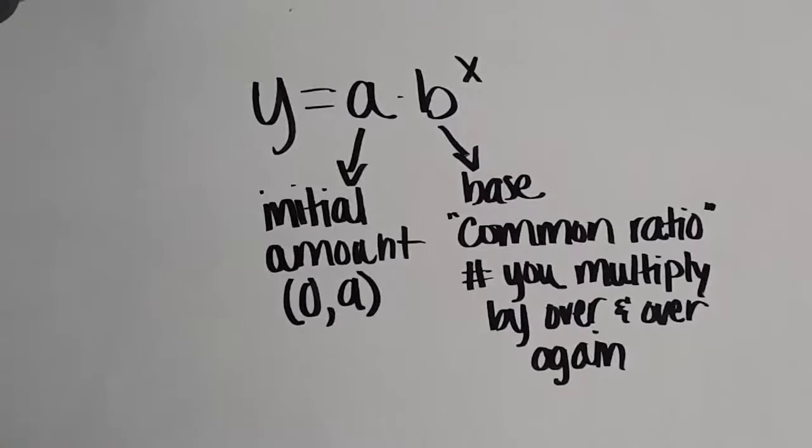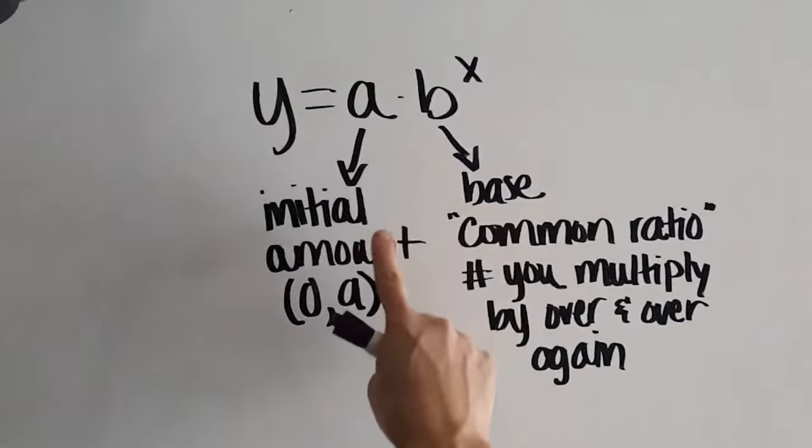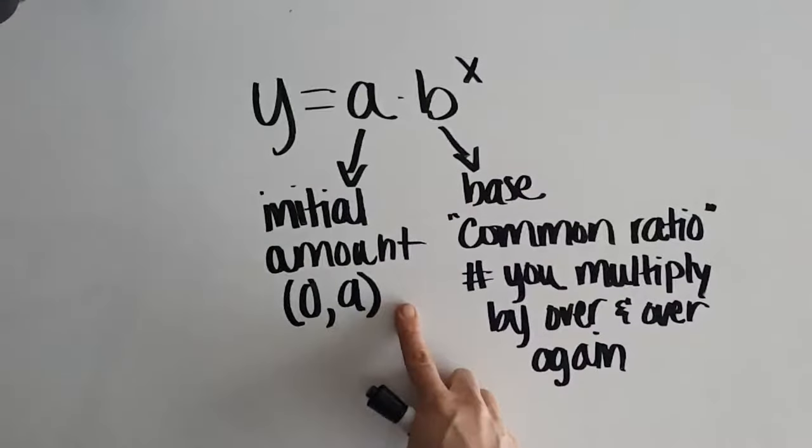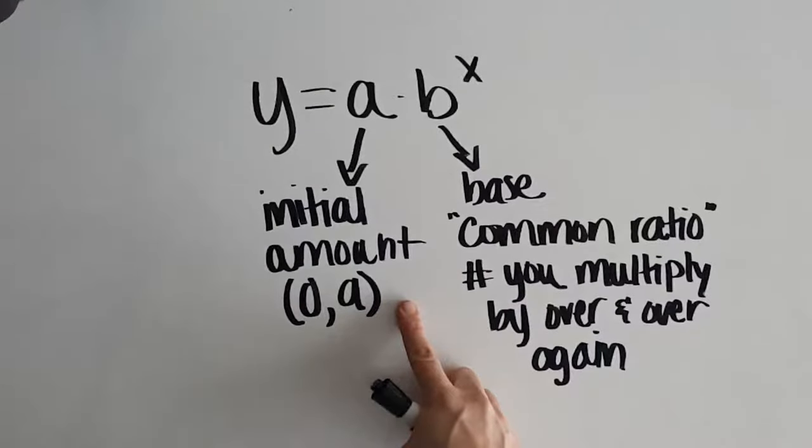So when we have equations in the form y equals a times b to the power of x, we have to know what these values mean so we can find them. So a always represents your initial amount. It's what you start with. So in a situation, if I say the population has 100 people, a would be 100.